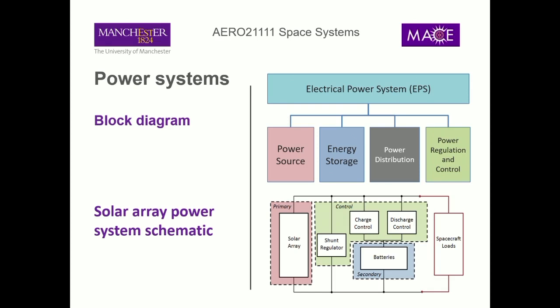In the control section of the power system, you've got some sort of shunt regulator that controls the voltages in the system. You've also got some way to control the charging and discharging of the battery, so that you don't charge up the battery too rapidly or discharge it too quickly — because that can affect the battery lifetime. And on top of that, all of the spacecraft loads are pulling power from that system.